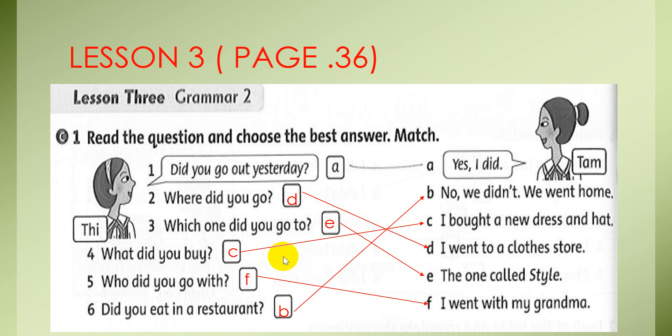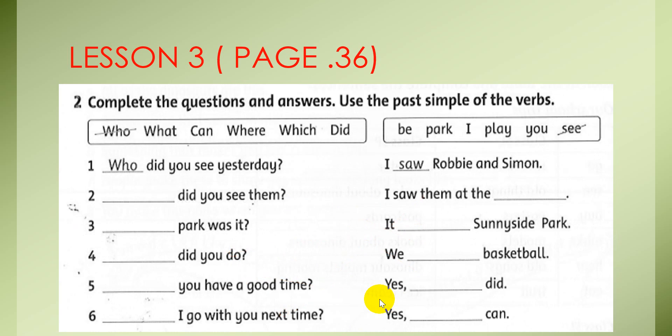Okay, class. We move to the next. Number 2, complete the questions and answers. You use past simple of the verbs. You complete the questions and answers using the past simple tense. Number 1, who did you see yesterday? The answer is, I saw Robbie and Simon.